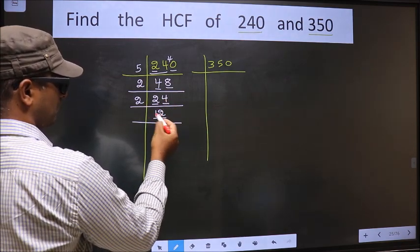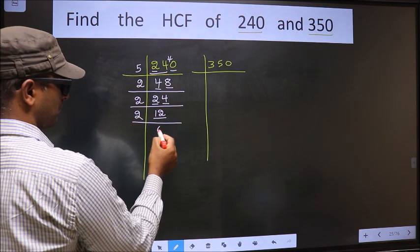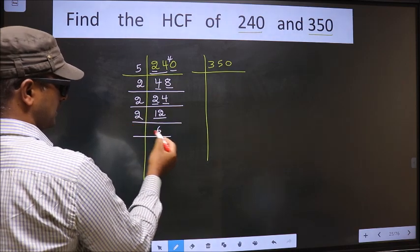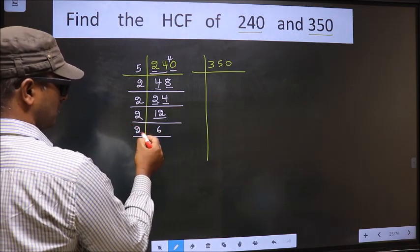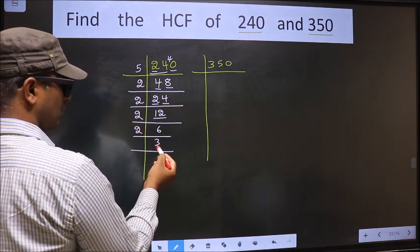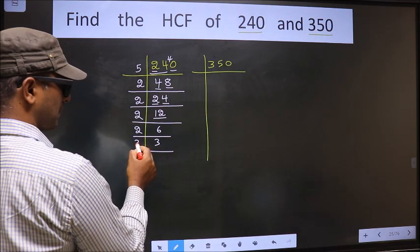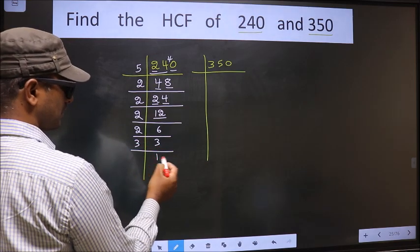Now here we have 12. 12 is 2×6=12. 6 is 2×3=6. We have 3; 3 is a prime number, so 3×1=3.